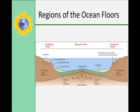The ocean floors have been divided into three major regions: the continental margins, the ocean basin, and the mid-ocean ridge. The continental margin is the transition zone between the continent and the ocean basin. Ocean basins are located at the bottom of the continental rises or continental slopes, and the mid-ocean ridge is found near the center of most ocean basins and is associated with divergent plate boundaries.